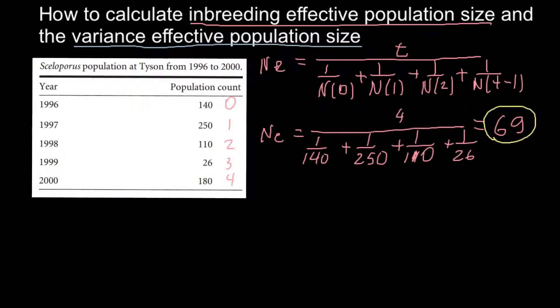As you see, this is a very different number from what we got here. So we use this number as inbreeding effective population size. When we calculate, for example, inbreeding coefficient and rate of inbreeding over time, we consider that this population has 69 individuals.